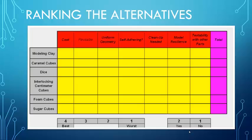Now, when we rank these, we don't want to look at one, like say, modeling clay and work through all of the different criteria. We want to compare each of the actual ideas and look at one criteria at a time. So, in this case, we would look at, like, the cost.